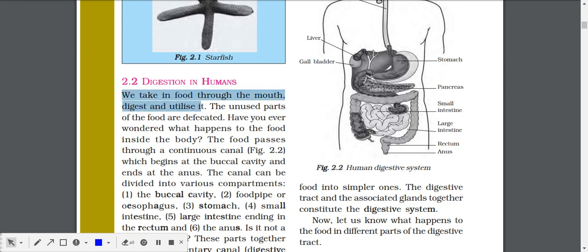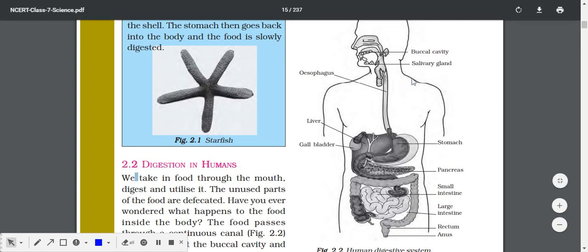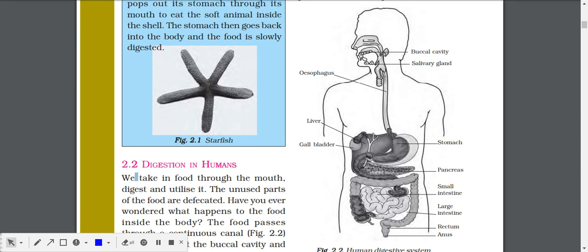Digestion in humans: We take in food through the mouth. Let's see the whole process with this figure. We take in food from here, then that food goes into the buccal cavity. Salivary glands secrete saliva. Saliva in Hindi we call it 'thook.' That saliva helps in breaking down starch into simpler sugars.